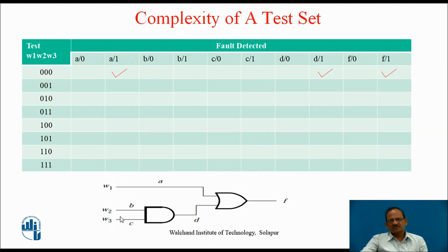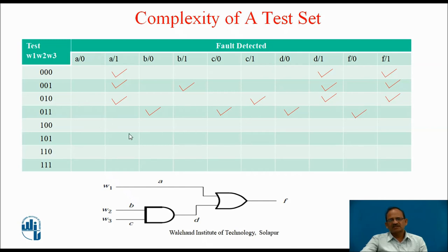Similarly, for test vector 0, 0, 1, the correct output is again 0, but a faulty circuit will produce 1. This may be due to a stuck at 1, f stuck at 1, d stuck at 1, or additionally b stuck at 1. For test vector 0, 1, 0, we can follow the same procedure to find the faults detected. For test vector 1, 1, 1, the correct output is 1, but a faulty circuit may produce 0 — this is possible only with f stuck at 0. This is how different test vectors detect different faults.